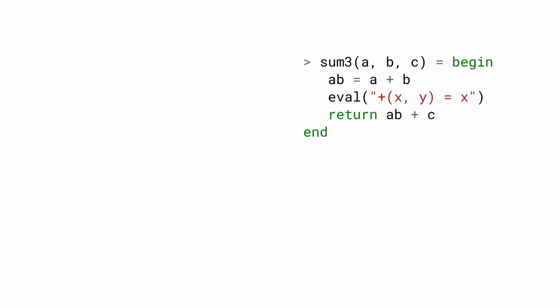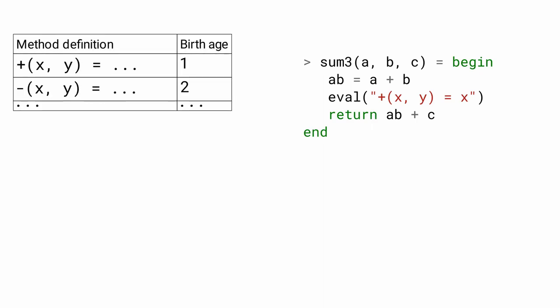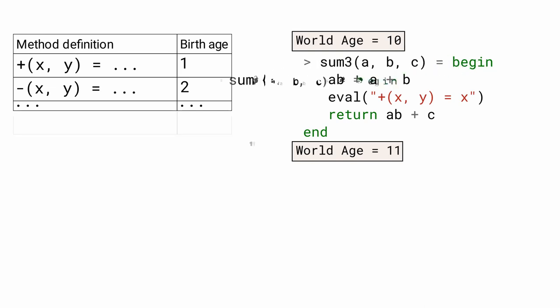Let's look at our running example again. Let the method table already contain some standard methods, such as plus. When the definition of sum3 is about to be processed, world age is equal to 10. So, processing the definition, we increment the world age counter and store sum3 in the method table with a birth age of 11.